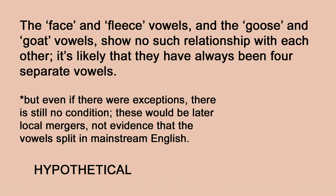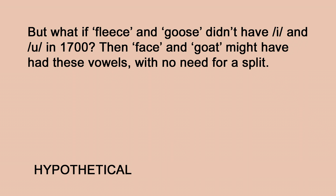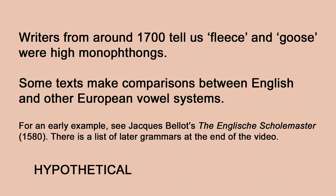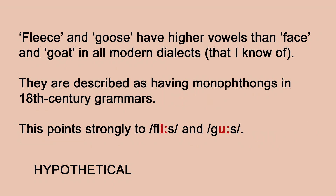Our other alternative was that maybe fleece and goose didn't occupy the high front and back positions back then. But this is in direct opposition to what writers at the time were telling us — they often used vowels of other European languages to clarify the sounds. We know these vowels weren't lower, because in that hypothetical they'd be lower than the face and goat vowels, which would mean they've since switched around in every single dialect of English with no evidence in writing or rural dialects, and that all those grammarians were lying. That seems unlikely.